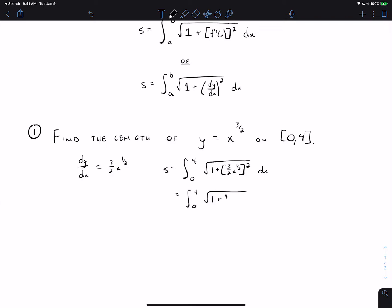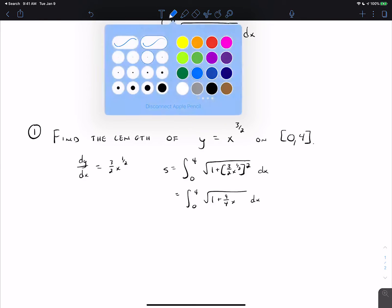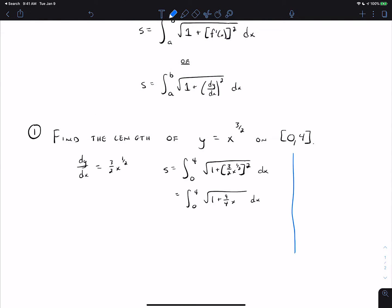We get 1 plus 9 fourths x dx. If it just says to set up the integral, that would be enough. If we want to evaluate, we can do u substitution. I'll choose to do the u substitution on the side. We're going to do the anti-derivative of the square root of 1 plus 9 fourths x dx.